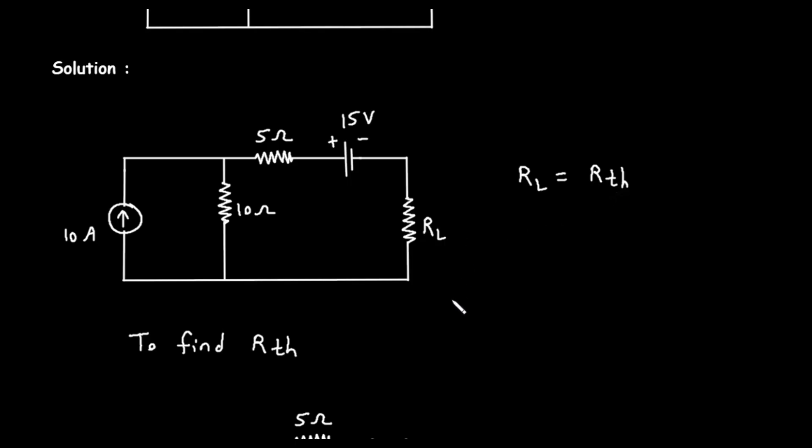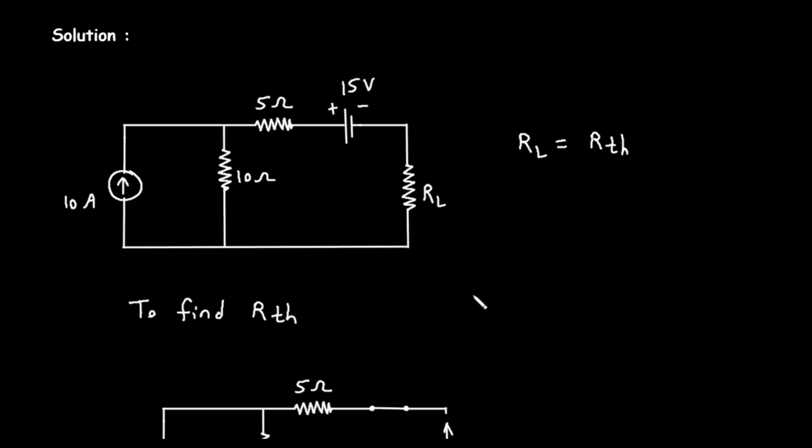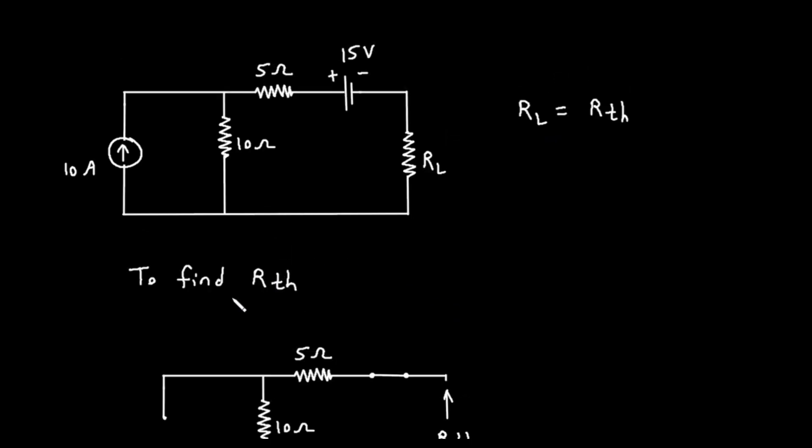Let's begin the process to find R sub TH. The first step in finding the Thevenin resistance is to mentally remove the load resistor, R sub L, from the circuit. This leaves us with two open terminals where the load was connected. We are going to find the equivalent resistance looking into these two terminals.